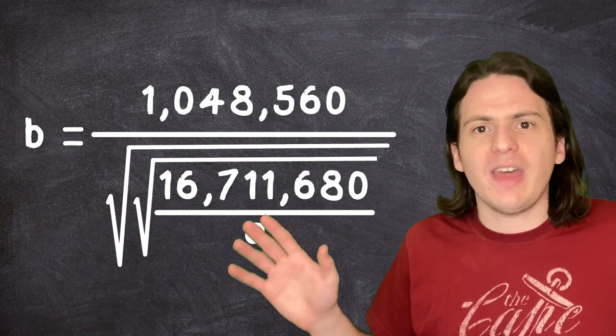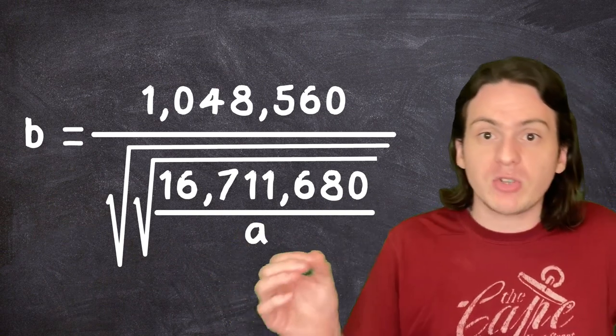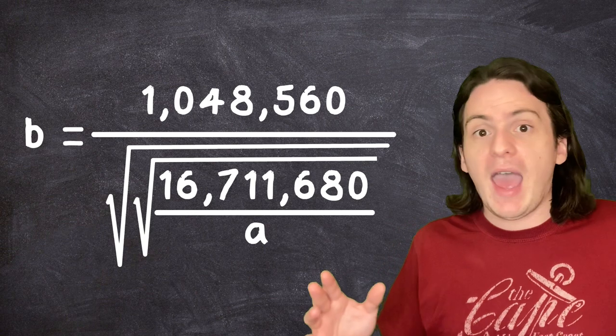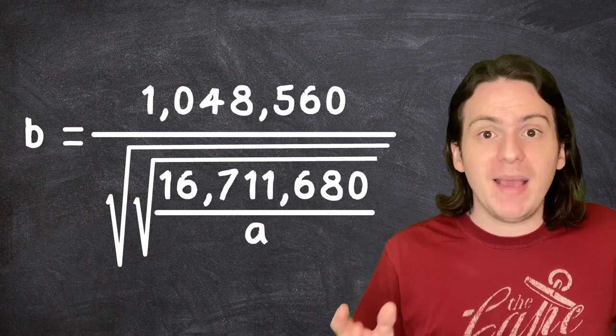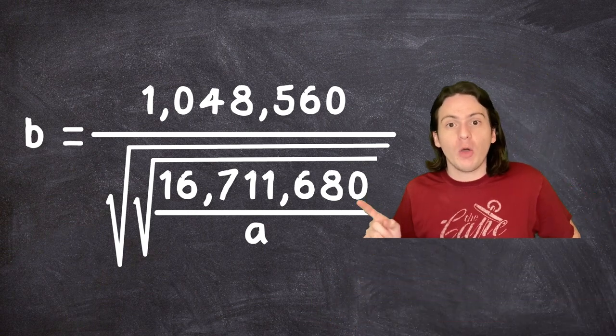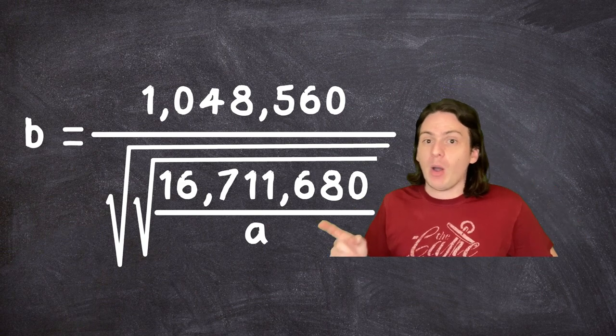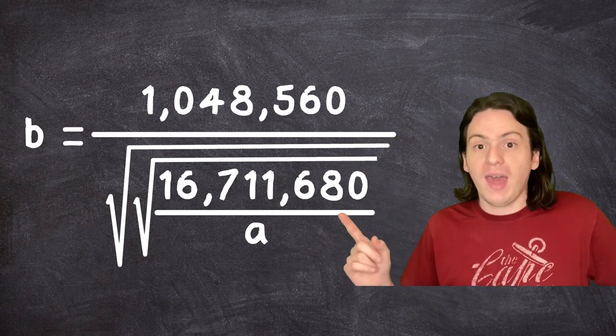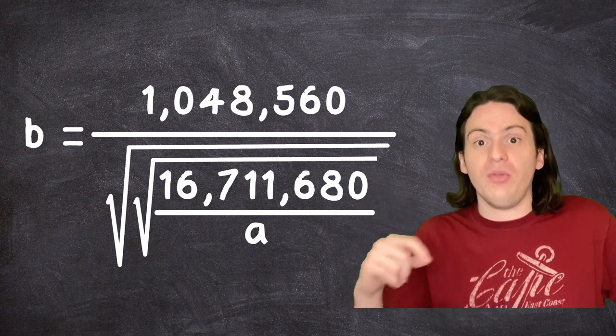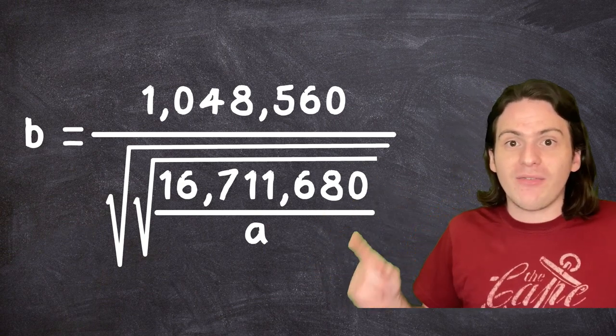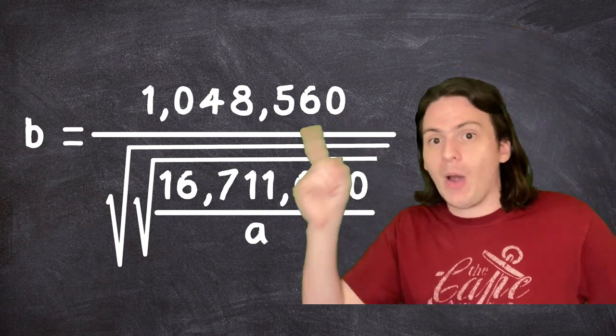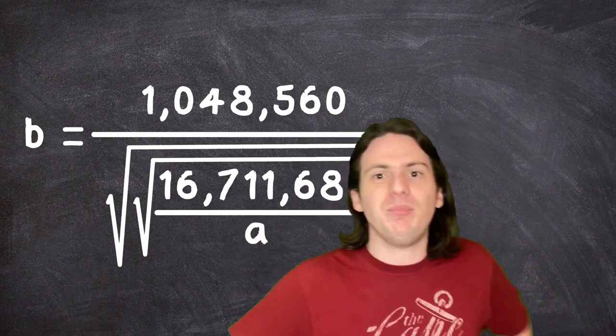This second formula that we threw out earlier is actually pretty straightforward, even if it does look absolutely insane. Basically, you take this one real big number here and divide it by whatever you got for A. Then you take the square root of that number, then you take the square root of that number, and then you divide this really big number by whatever you got from that, and you get B. Great! Now what's the point?